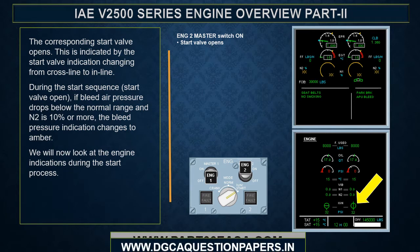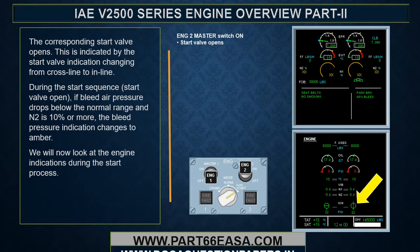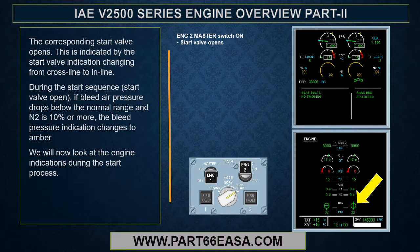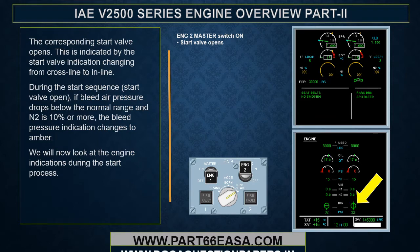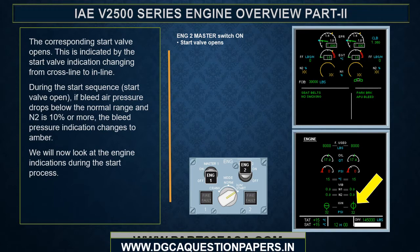During the start sequence with the start valve open, if bleed air pressure drops below the normal range and N2 is 10% or more, the bleed air pressure indication changes to amber.